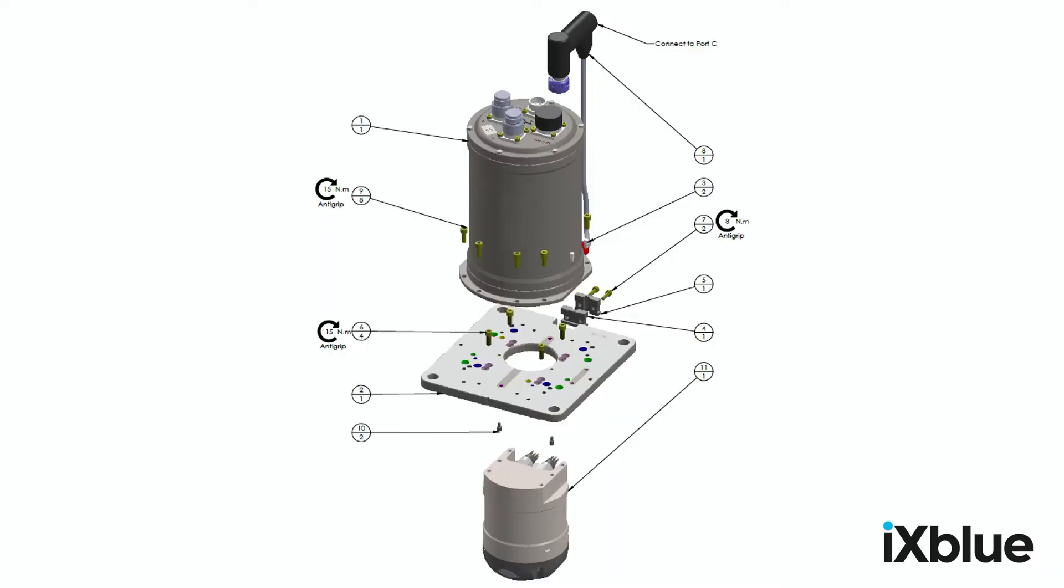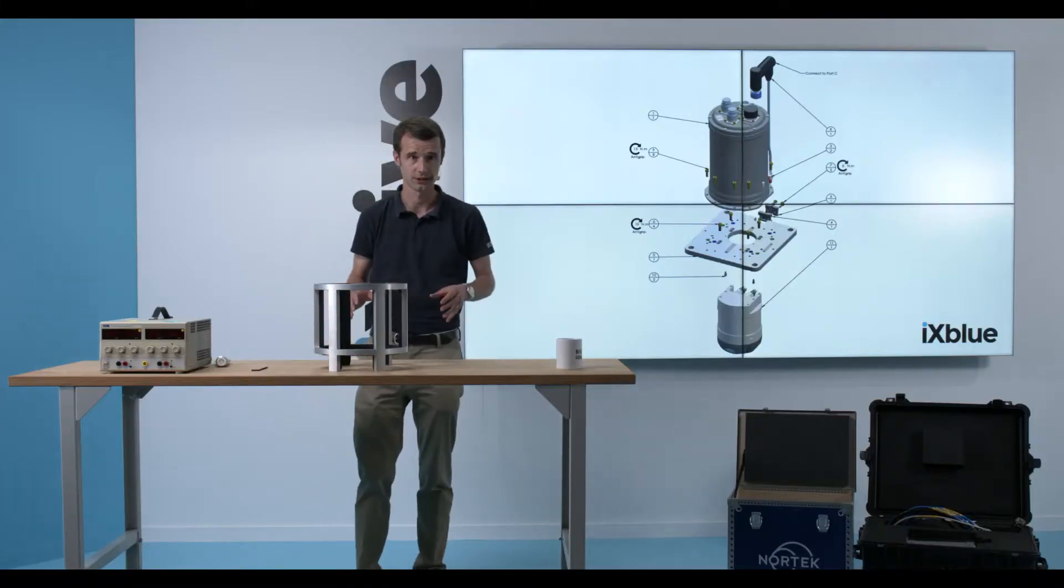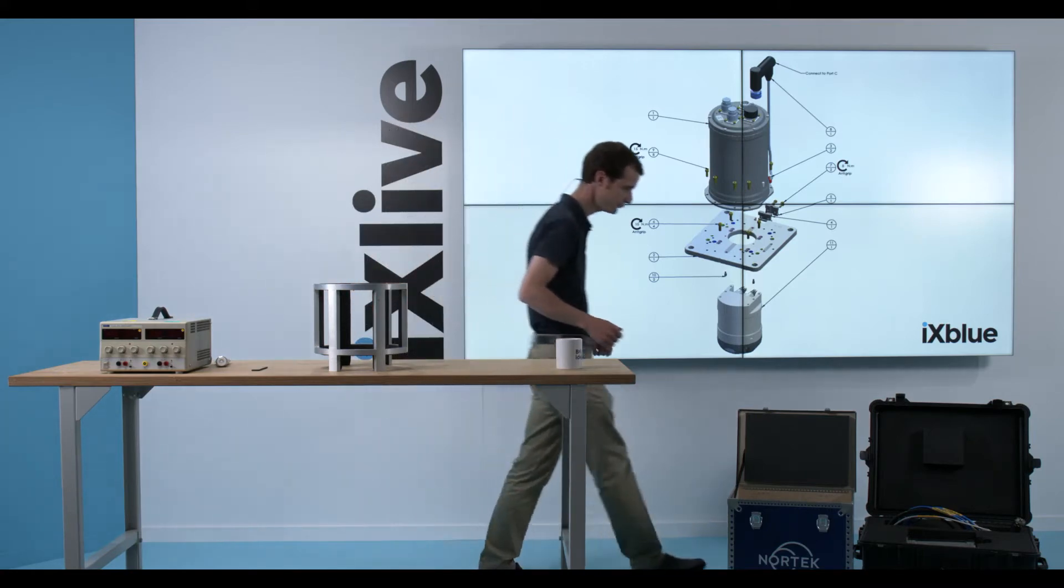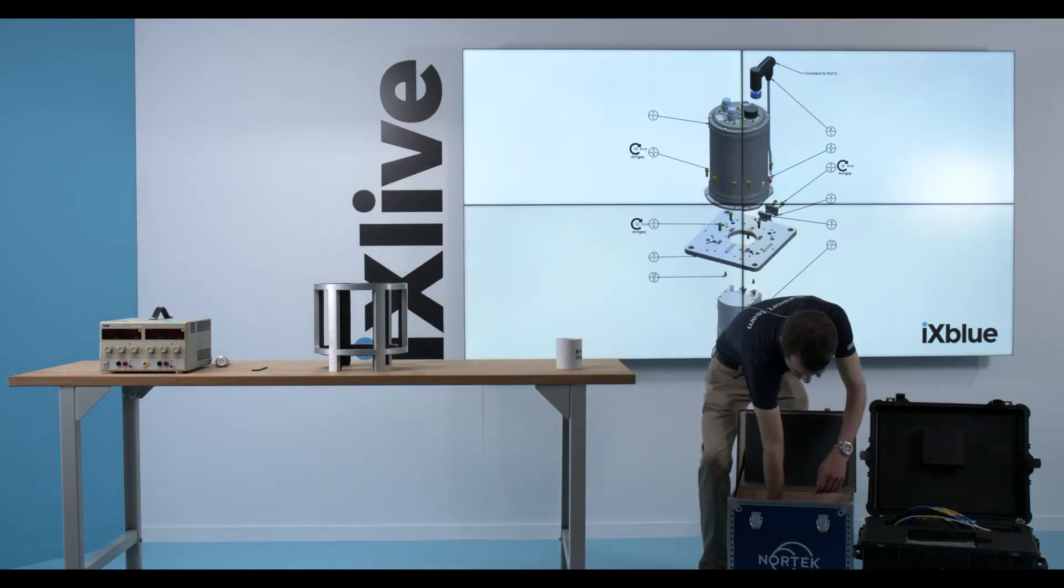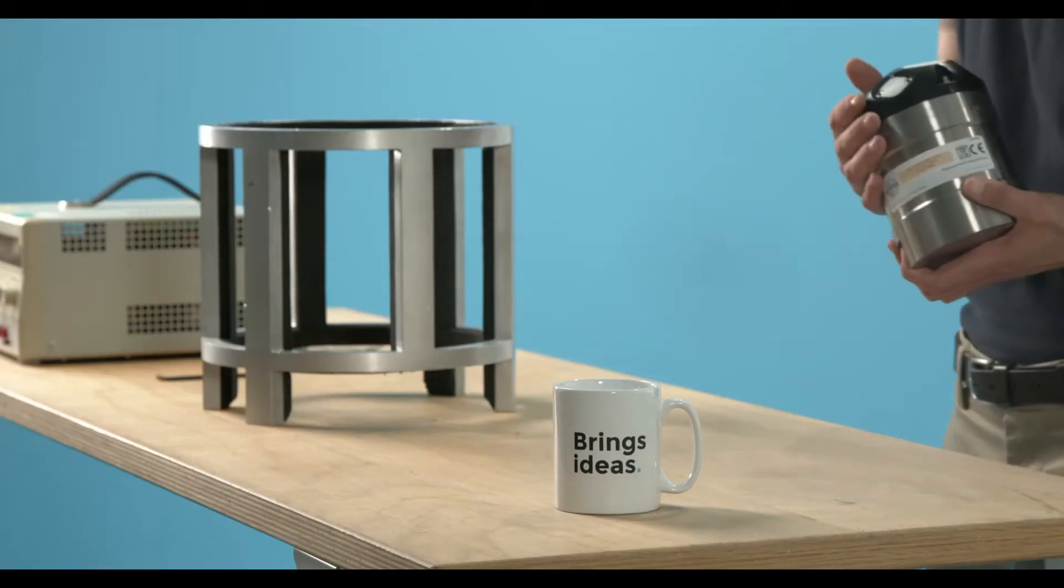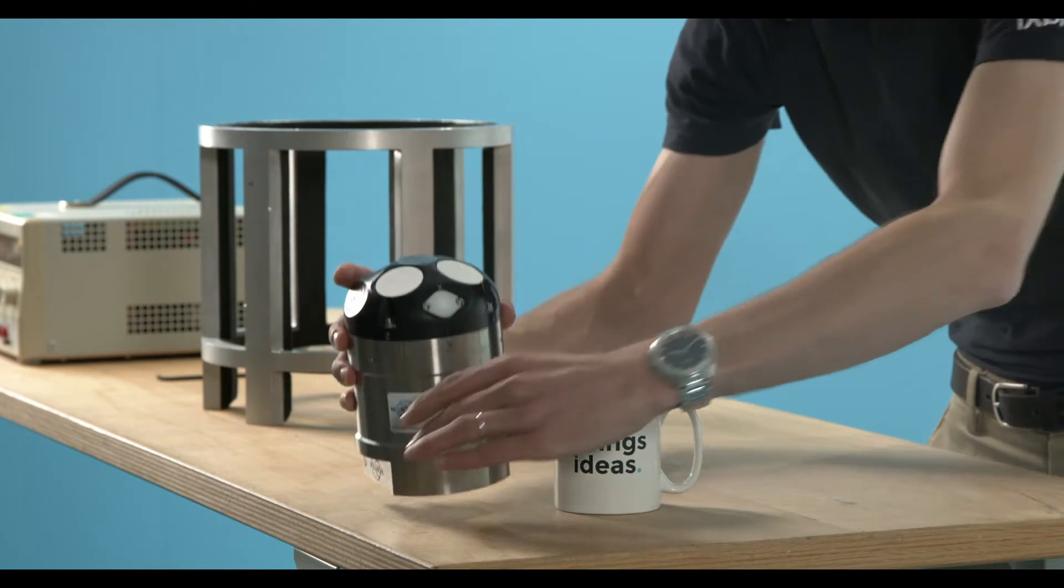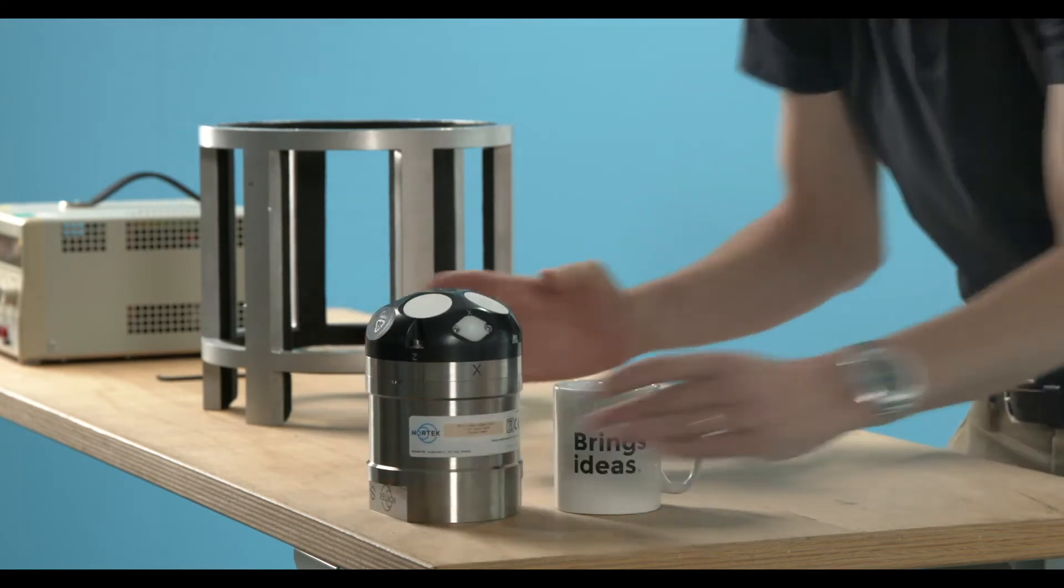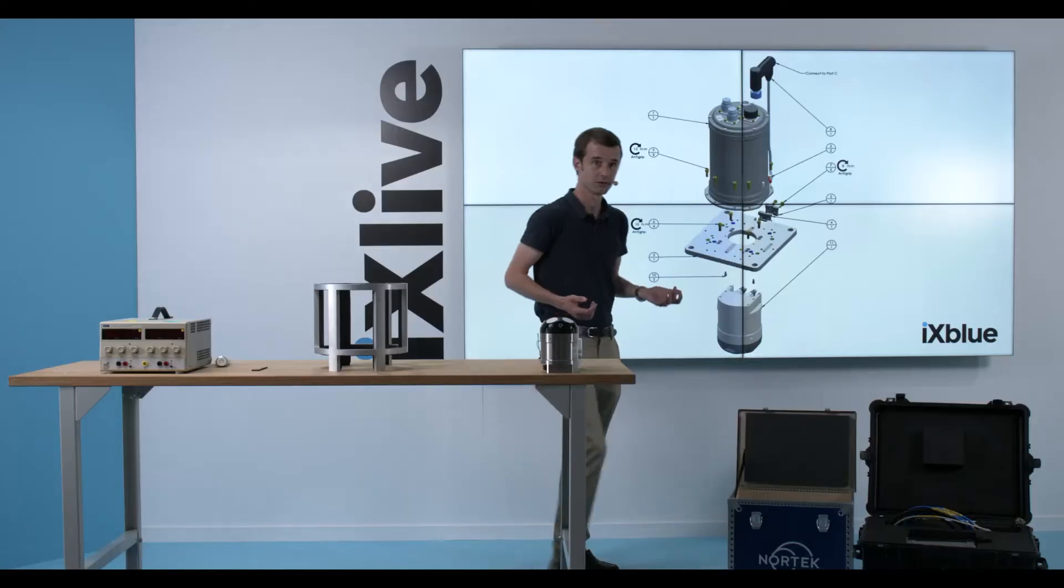I will take those items out of the box and put them on the table. So first, I will take the NORTEK DVL, thanks to our friends at NORTEK for lending this nice gear. Then I will take out of the box the ROVINZ Nano.